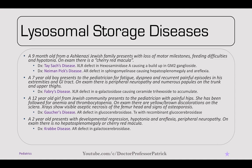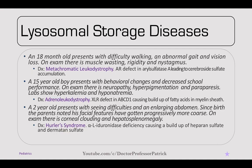A 2-year-old presents with developmental regression, hypotonia, areflexia, and peripheral neuropathy. On exam, there's no hepatosplenomegaly or cherry-red macula — this is Krabbe disease, an autosomal recessive defect in galactocerebrosidase. It's similar to Tay-Sachs and Niemann-Pick, but without the cherry-red macula. An 18-month-old with difficulty walking, abnormal gait, vision loss, muscle wasting, rigidity, and nystagmus is metachromatic leukodystrophy — an autosomal recessive defect in arylsulfatase A, leading to cerebroside sulfate accumulation.